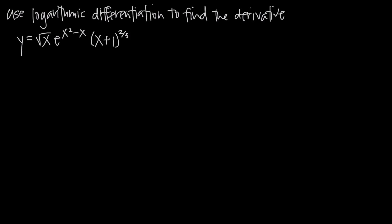In this video, we're talking about logarithmic differentiation, which is just like regular differentiation except that before we differentiate or take the derivative of both sides, we're going to take the natural log of both sides and then take the derivative. The reason we would do that is because sometimes it'll be easier to take the derivative if we've taken the natural log of both sides first than it would be to differentiate normally.